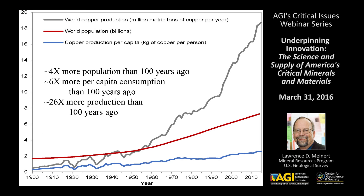One of the reasons for this — the underlying driver — is the change in world population. This graph shows that over the previous century world population increased more than four times, from less than two billion people on Earth to about seven billion at present, projected to reach about nine billion by 2050.